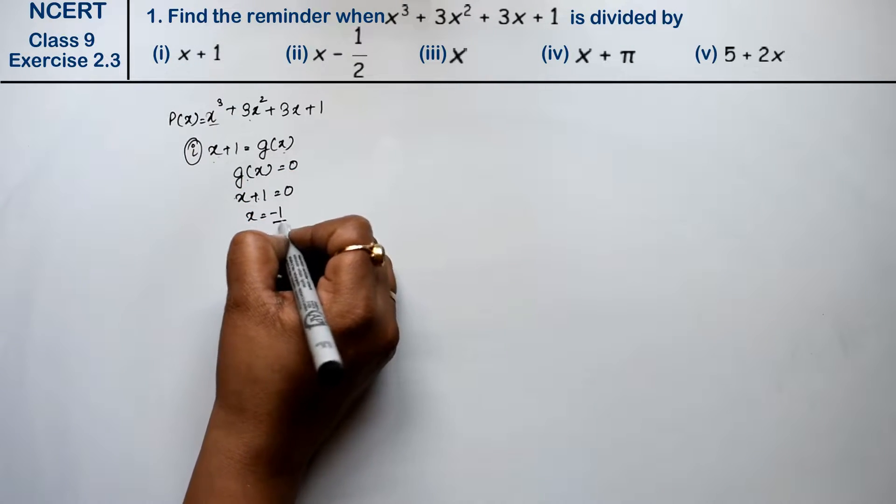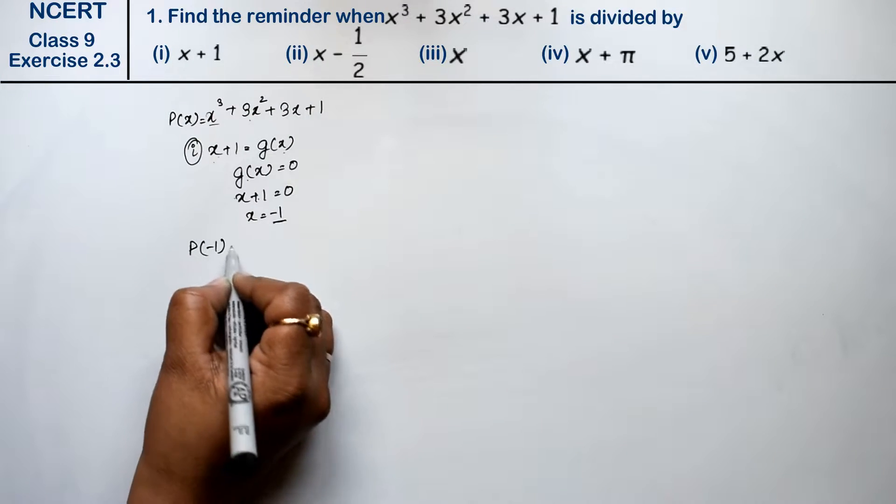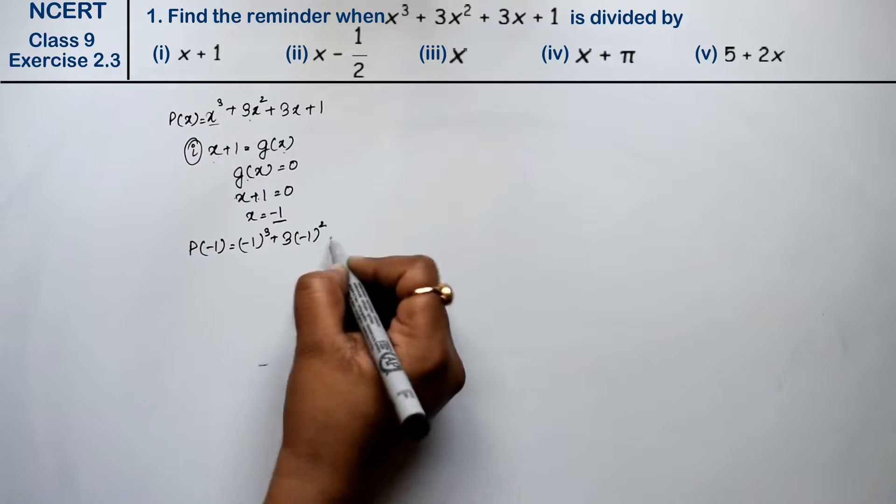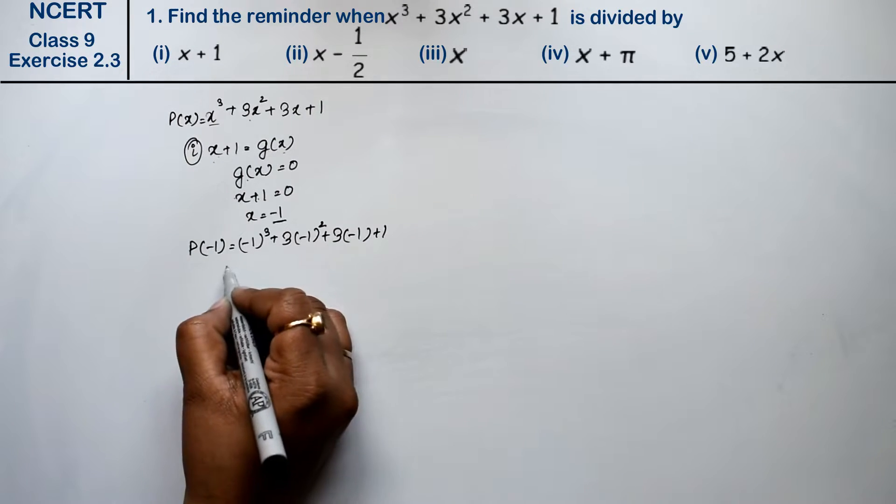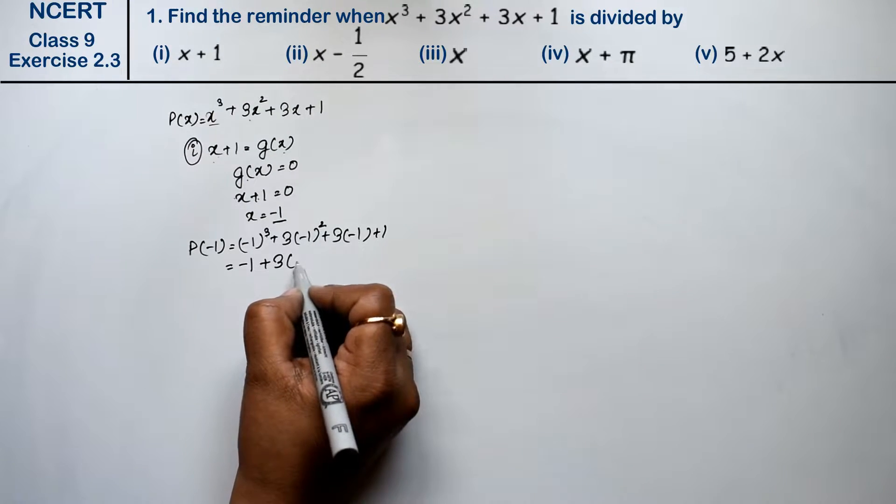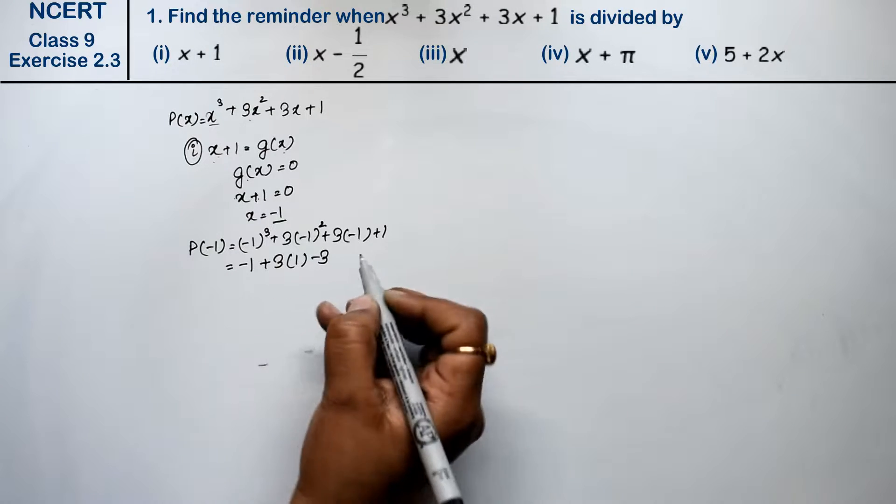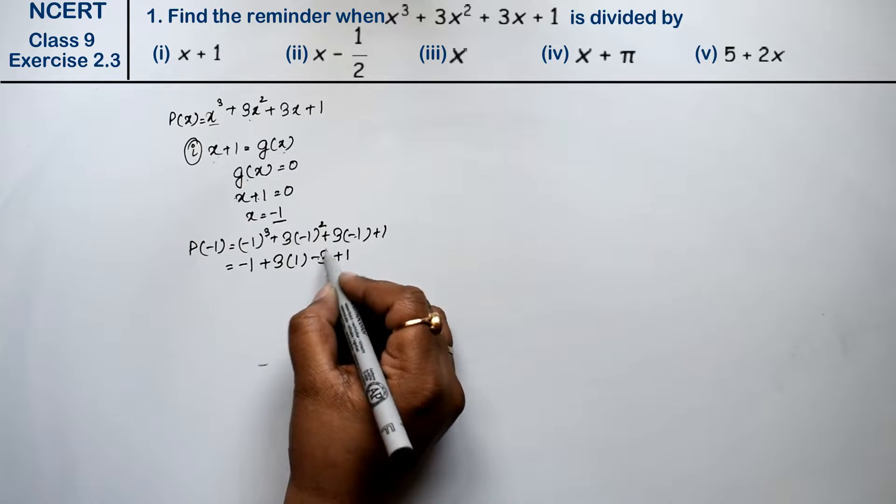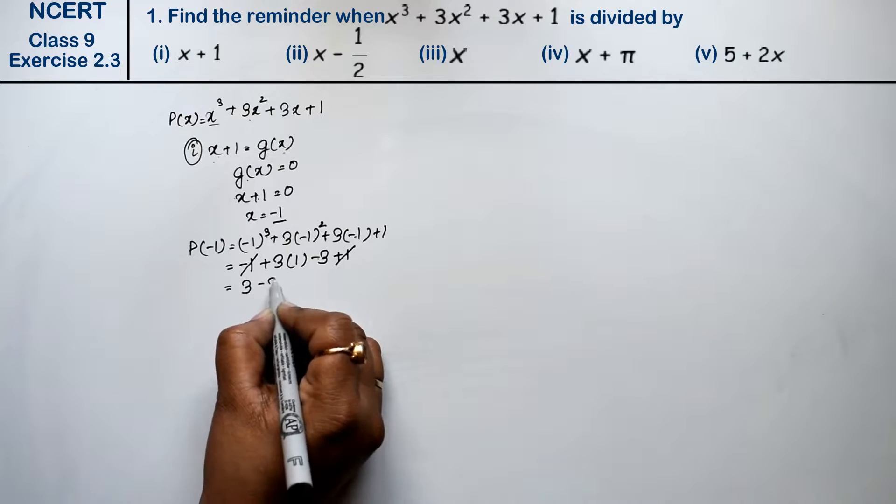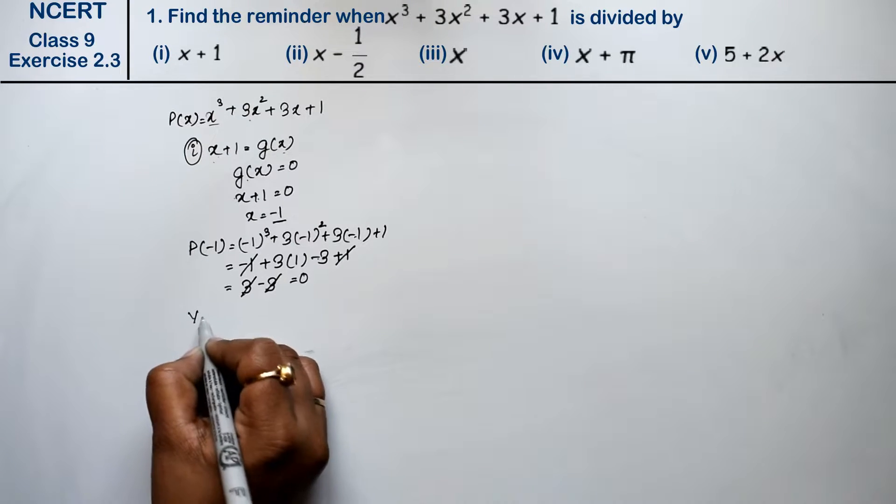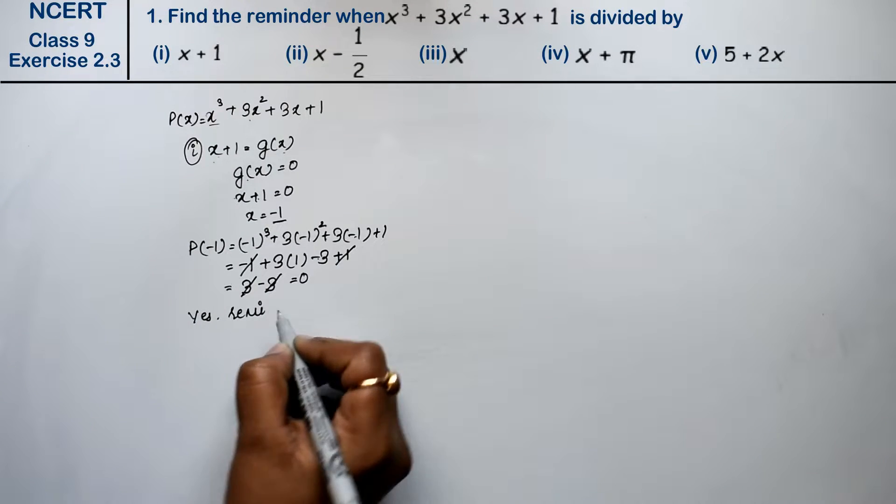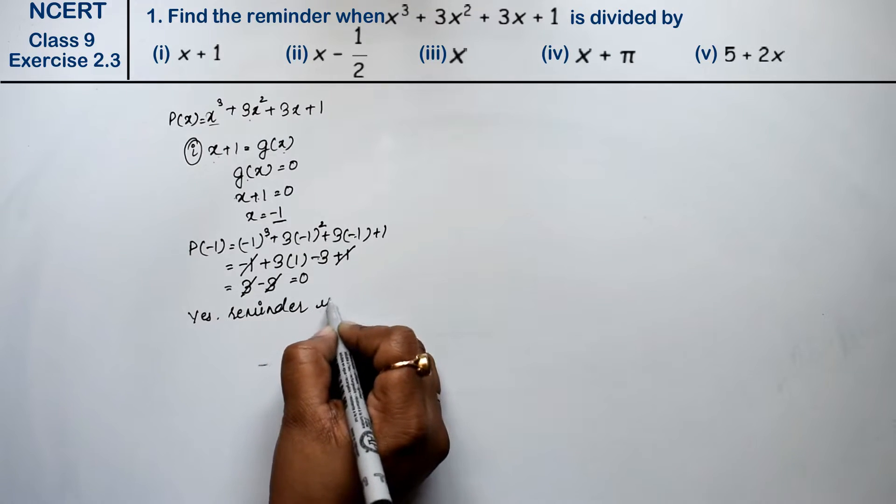Now we will keep this in p(x), so p(x) will be minus 1 cubed plus 3 into minus 1 squared plus 3 into minus 1 plus 1. Odd power equals negative value minus 1, plus 3 into even equals positive plus minus 3 plus 1. Minus 1 and plus 1 cancel, so the value is 0. Hence there is no remainder, remainder is 0, it is a factor.